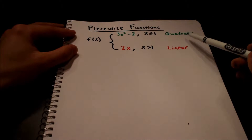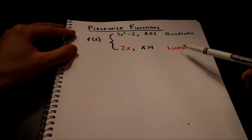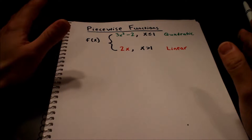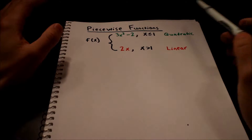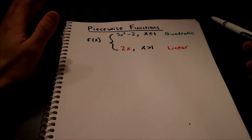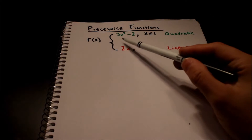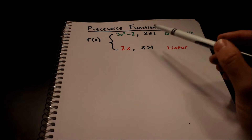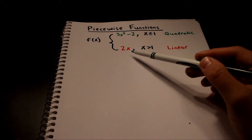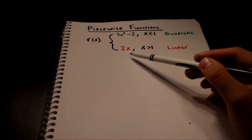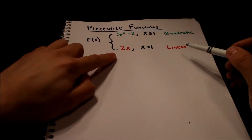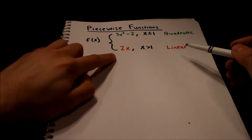I wrote quadratic and linear. The green one is actually a quadratic type equation because you have an x squared in the equation. Anytime you have x squared, it's going to be quadratic. Anytime you have y equals mx plus b, it's going to be linear like we saw in the other video. This red one is actually y equals mx plus b — you'll see in a second.